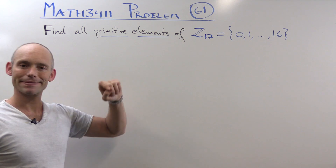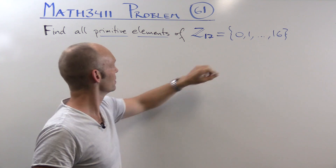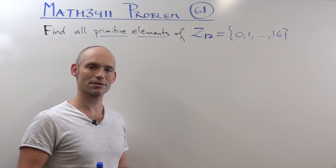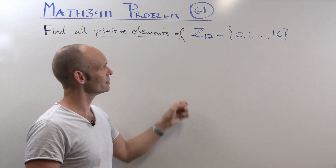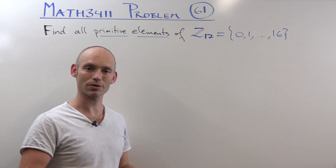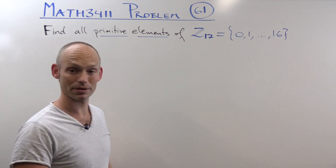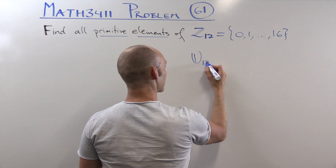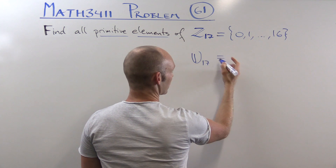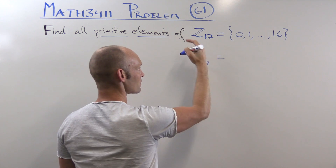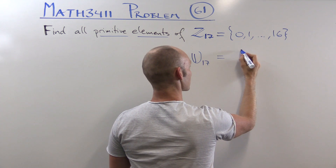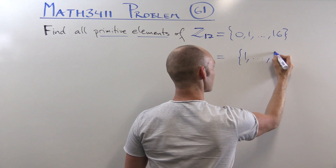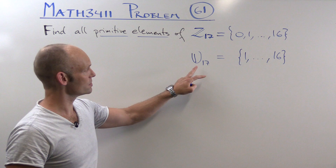Now, what is a primitive element? We have to find one of these numbers so that if we take all the powers of it modulus 17, those powers form a set equal to all of the units of the integers mod 17. We need to find out what the units are mod 17. That's actually rather easy — it's just all of the elements that have an inverse.